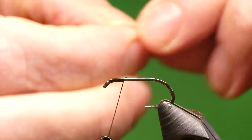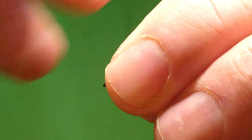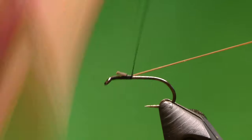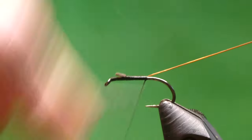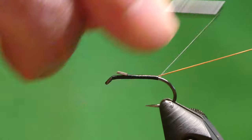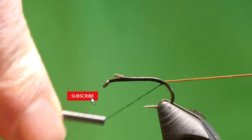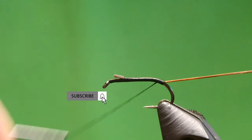We'll be using this brown flexi-floss, just tie that in and stretch it. Just keep it right on top of the hook shank and take the thread just round the bend and bring the thread back up.